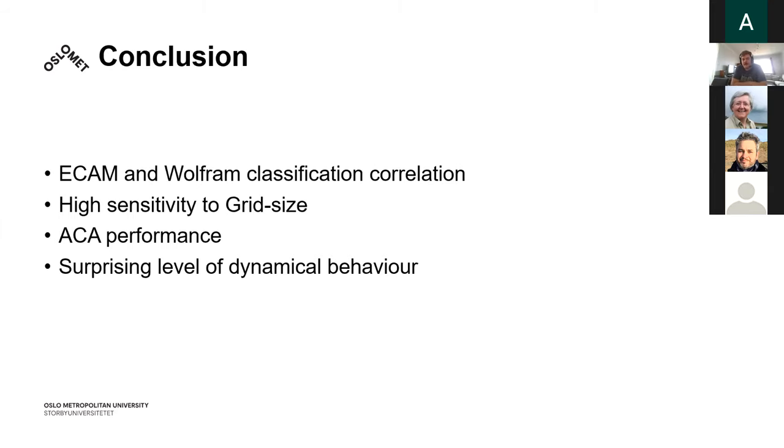So some conclusions. We find that elementary cellular automata with memory and Wolfram classification correlates a bit with behavior. We find these rules that have been previously studied have a very high sensitivity to the grid size. We find that the additive cellular automata performs quite well. This includes rule 170. We find a very surprising level of dynamics that was higher than we expected.